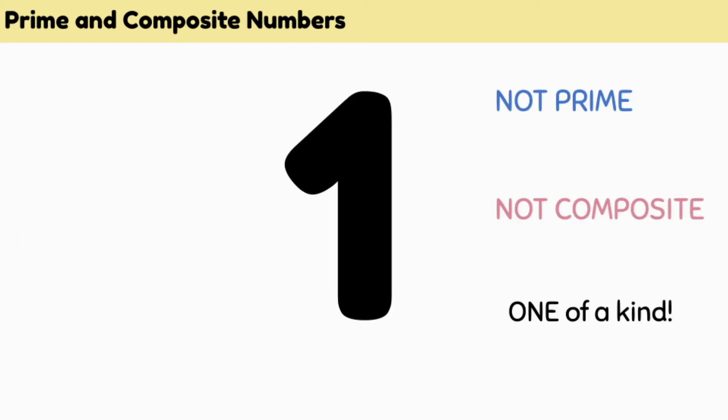It is also important to note that while we have said that one is not a prime number, it is also not a composite number. One has only one factor. One is not a prime, not a composite. It's just one of a kind.